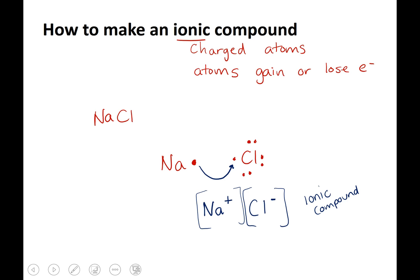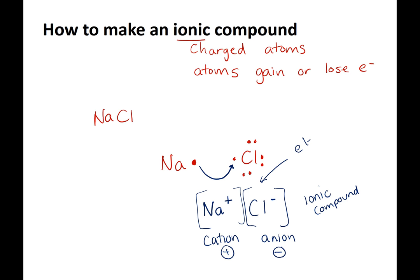I will ask you to show me the movement of electrons. You always write the cation - the positive one - first, and the anion - the negative one - second. Also make sure that the compound is electrically neutral: one minus plus one positive equals a charge of zero, so you're good.